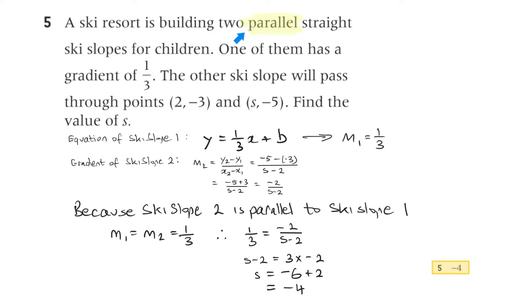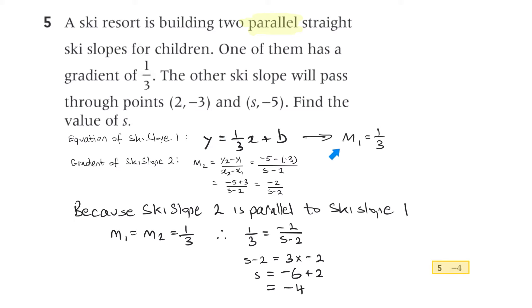Question 5: a ski resort is building two parallel straight ski slopes. One has a gradient of 1 third. The other ski slope passes through two given points — find the value of s. Since they're parallel, both have the same slope. The gradient of ski slope 1 is 1 on 3.